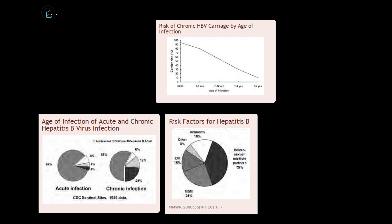Let's begin by reviewing some epidemiology of chronic hepatitis B. Chronic hepatitis B occurs when acute hepatitis B converts into chronic hepatitis B. In this first graph — these are all images from the CDC — we see that the age of an individual tells us how likely they will become a person infected with chronic hepatitis B. For the newborn, more than 90% of newborns who get acute hepatitis B end up getting chronic hepatitis B.